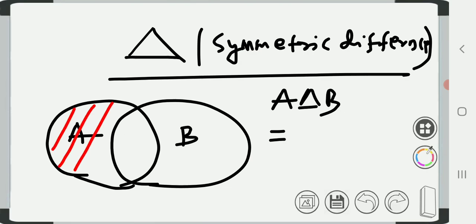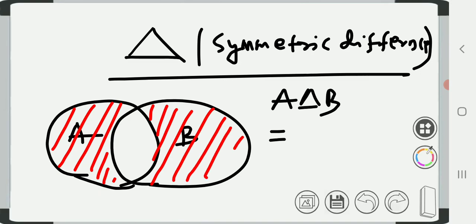...this part and union with this part. What is this part? A difference B, and this is your B difference A. That's A difference B union B difference A.